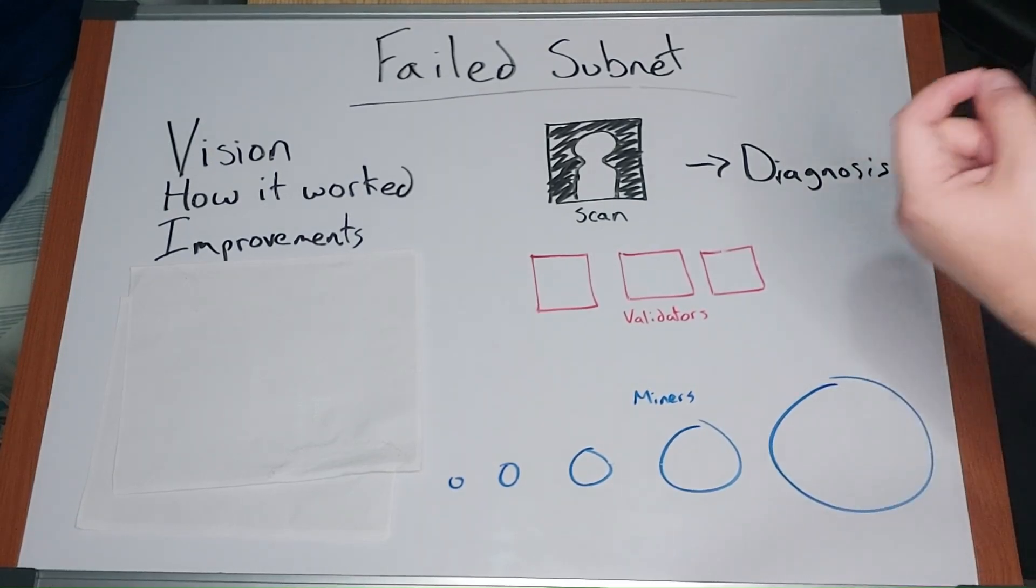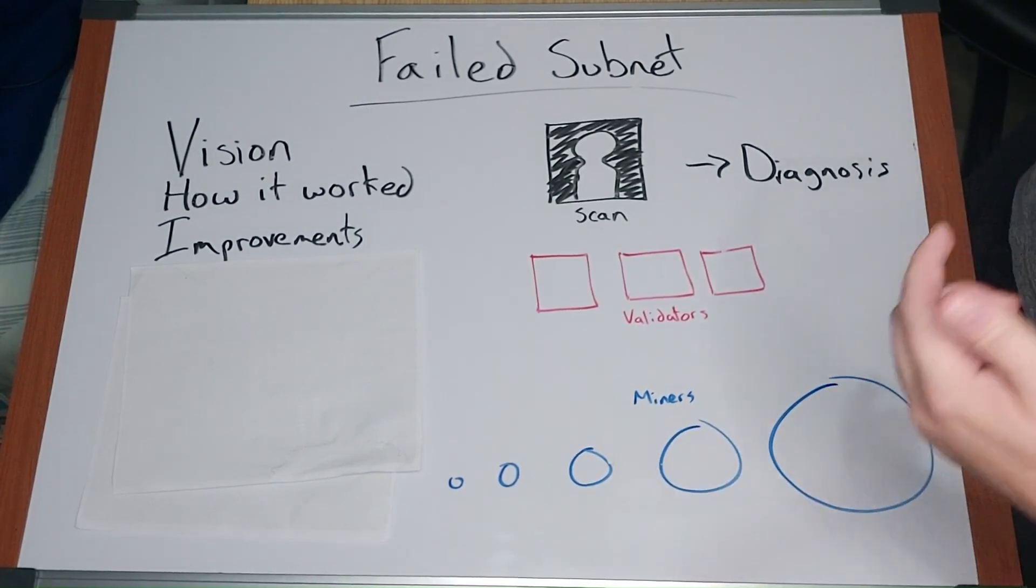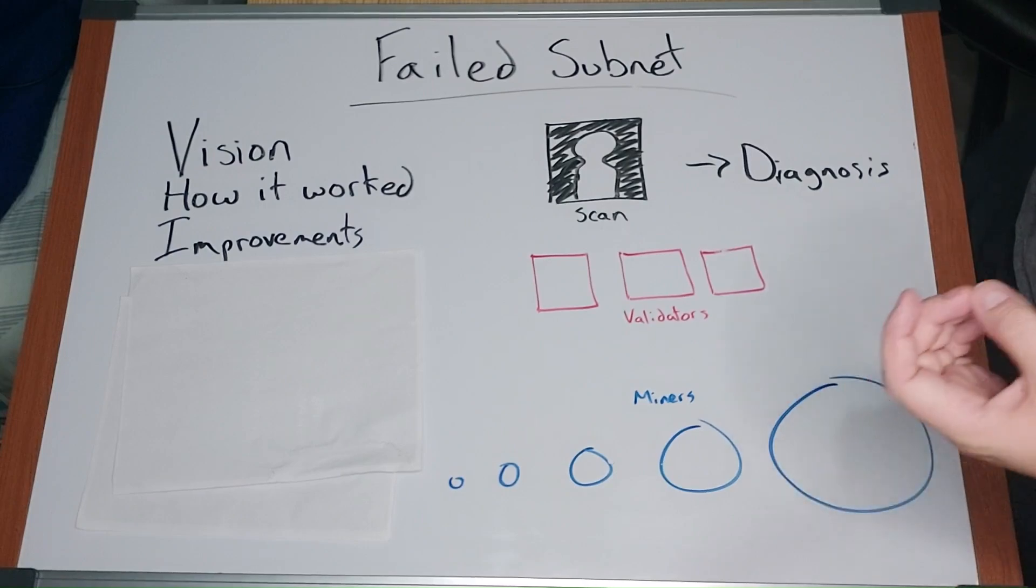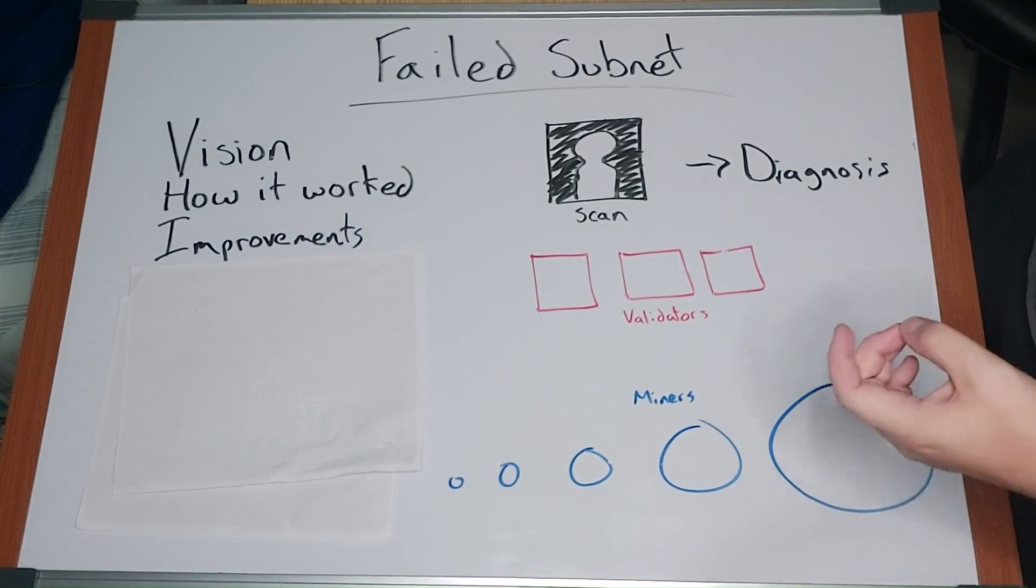Some miners then shared the same model across multiple miner keys, thereby receiving more rewards for doing the same amount of work. So the subnet owner changed it so that models had to be unique.